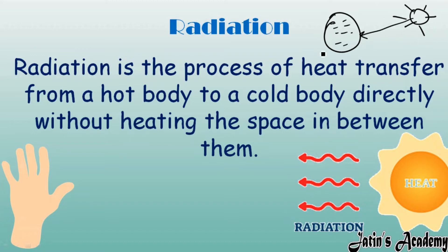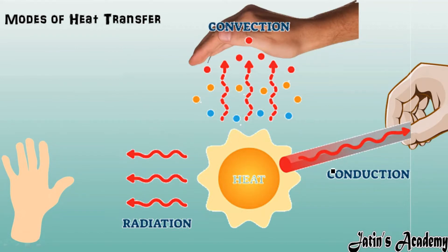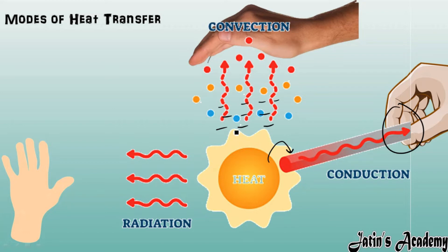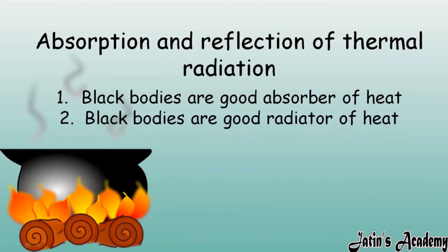We have examples related to conduction, convection, and radiation. Here we have a burning fire. When we take a conductor towards the burning fire, it first takes the heat at one point and then, due to conduction, we feel hot at the other end too. Similarly, air particles near the fire take up the heat, become hot, and give us heat — that is convection. But in radiation, even if there is a vacuum and no air particle, we still feel hot when standing near the fire — that is radiation.